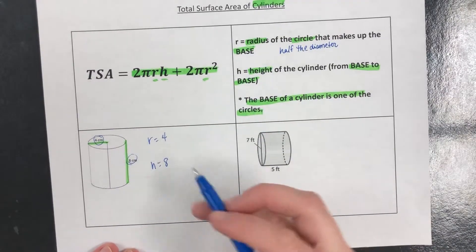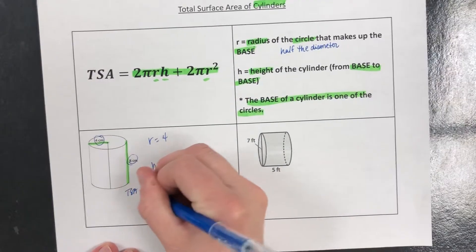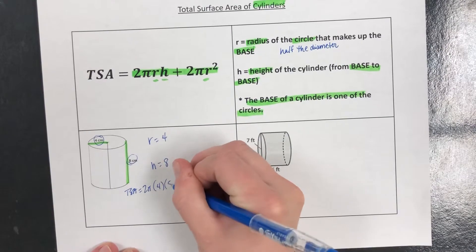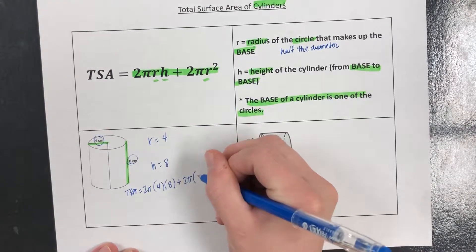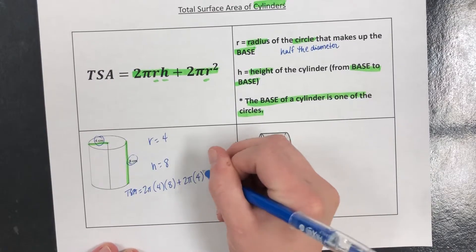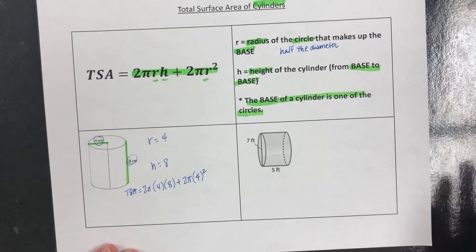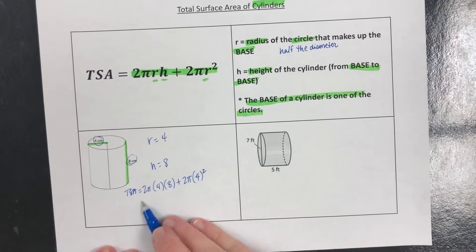So we have the two things we need. Now we just plug it into our equation. Total surface area equals 2π times the radius times the height plus 2π times the radius squared. Type it into your calculator so you can type it in exactly as it looks.